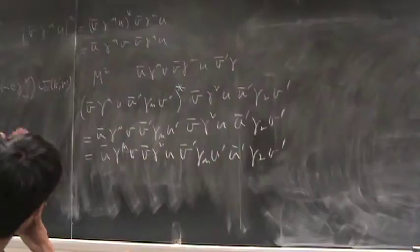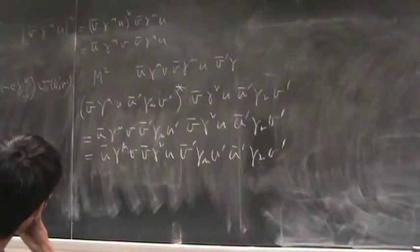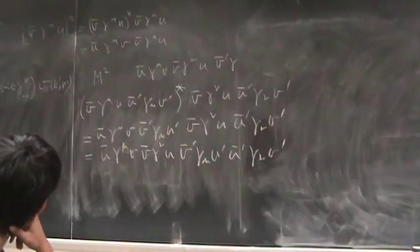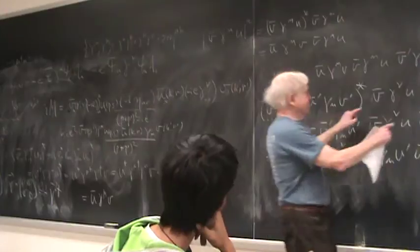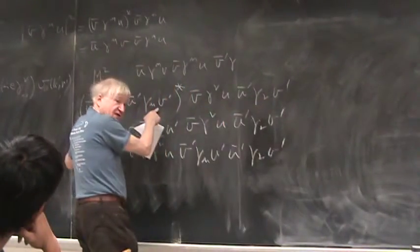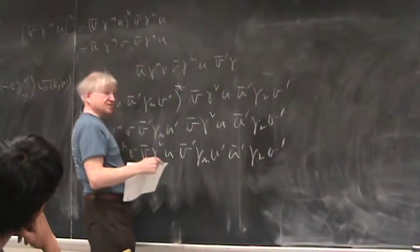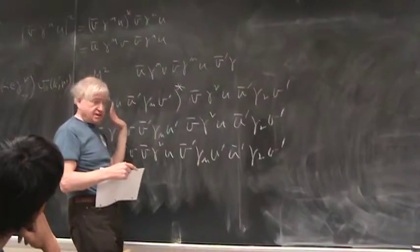In other words this is this whole amplitude times its complex conjugate times itself. And so we then have v̄ γ^μ u, ū' γ_μ v'. So that's what we wind up with. And that then gives us ū γ^μ v, v'̄ γ_μ u', v̄ γ^ν u, ū' γ_ν v'.